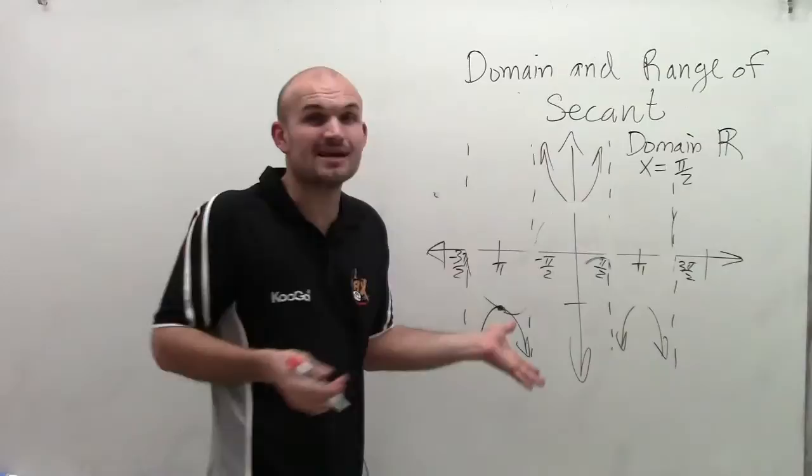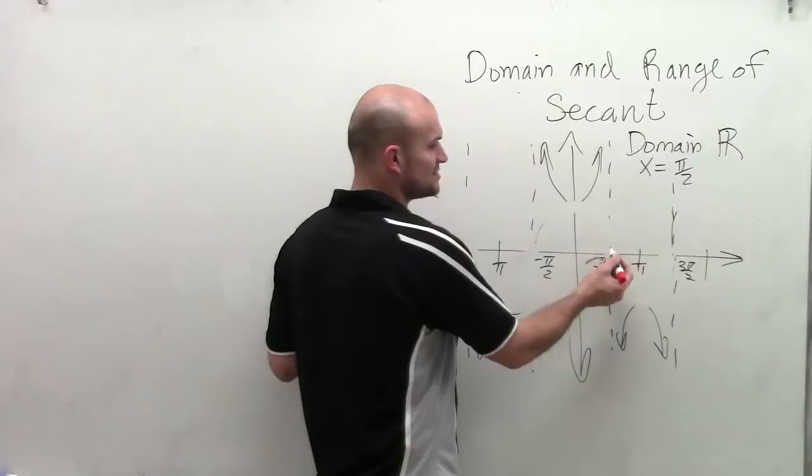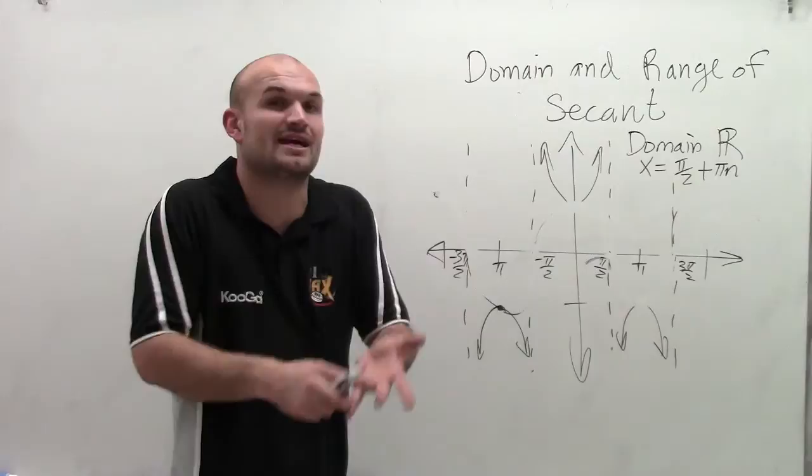So we say our domain is going to be all real numbers, except x cannot equal pi halves. But that's not it, right? It's going to keep going pi halves and 3 pi halves, and then keep on going in the positive and in the negative direction. So how do we write all of those representations? We notice that the distance between each asymptote is pi. So I can just write pi n, where n is going to be the number of multiples that you're going to keep on adding. n can be any real number, positive 1, positive 2, negative 1, negative 2. And that will represent all asymptotes.